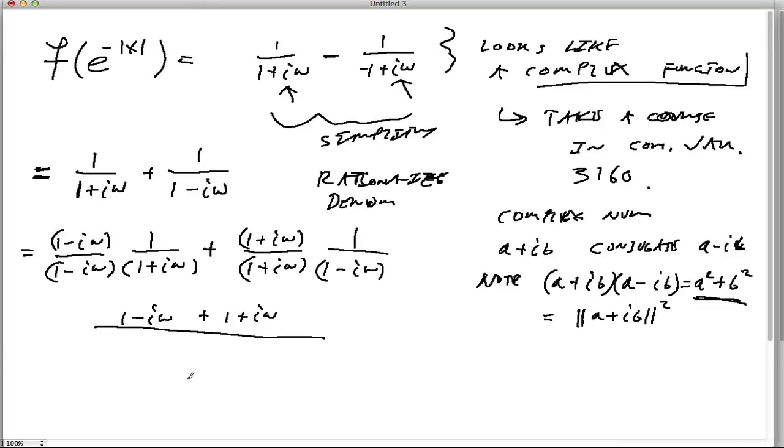So I said in general, the result of a Fourier transform will be a function that's a complex function. It may have an imaginary part to it and its output. But with this particular function, it's real valued.